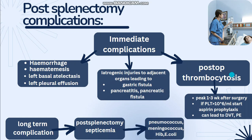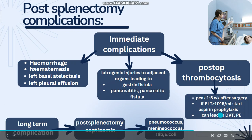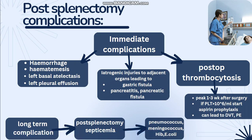Splenectomy can lead to post-operative thrombocytosis, as the spleen plays an important role in the production of antiplatelet antibodies that help in clearance of platelets. It is at peak one to three weeks after surgery. It is usually self-limiting, but if the platelet count increases to more than 10 lakh per ml, you need to start aspirin prophylaxis, as it can lead to DVT or pulmonary embolism.